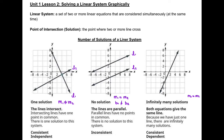The third graph is when those two lines actually overlap. That means they have the same slope and they have the same y-intercept. That means every single point on the line is a point of intersection, so this linear system will have an infinite number of solutions.